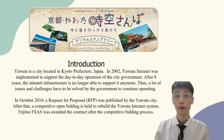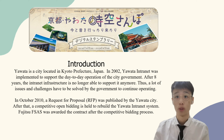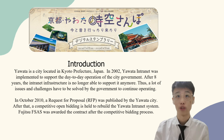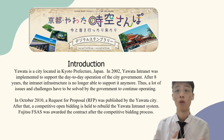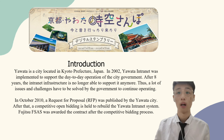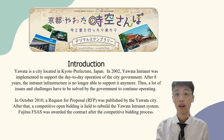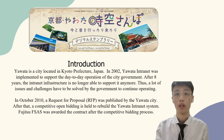Yawata is a city located in Kyoto Prefecture, Japan. In 2002, Yawata Intranet was implemented to support the day-by-day operation of the city government. After 8 years, the intranet infrastructure was no longer able to support it anymore. So the government had to solve a lot of issues and problems to continue operating. In October 2010, a request for proposals was published by Yawata City. After that, a competitive open meeting was held to rebuild the Yawata Intranet system. Fujitsu's FSAS was awarded the contract after the competitive meeting process.